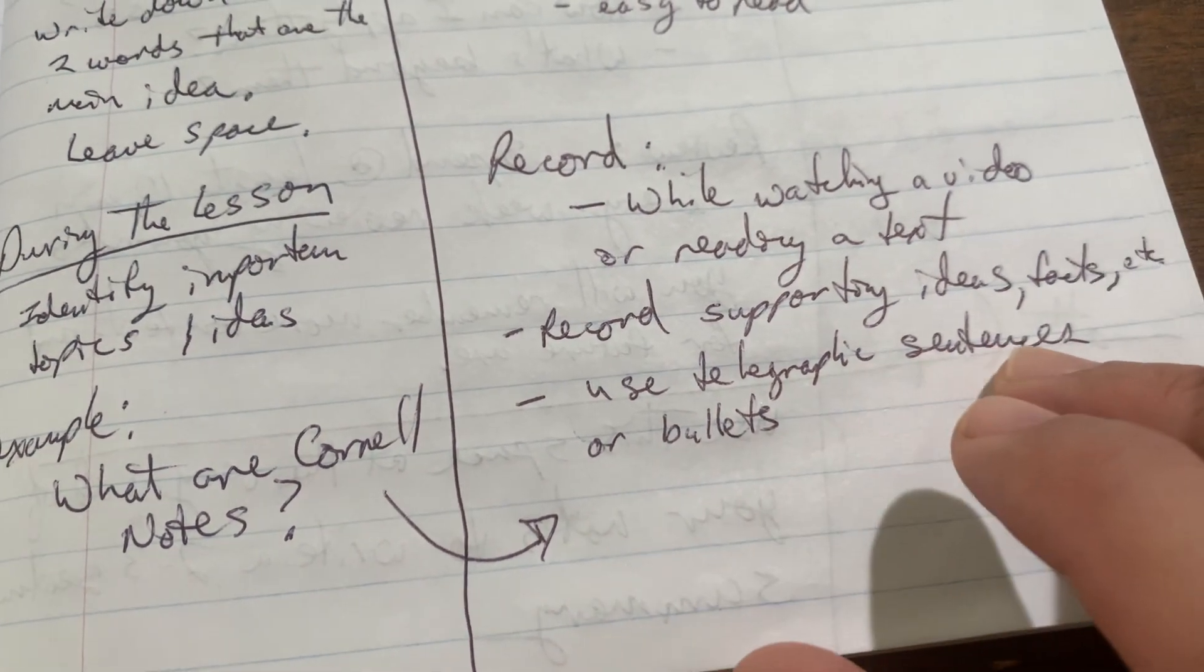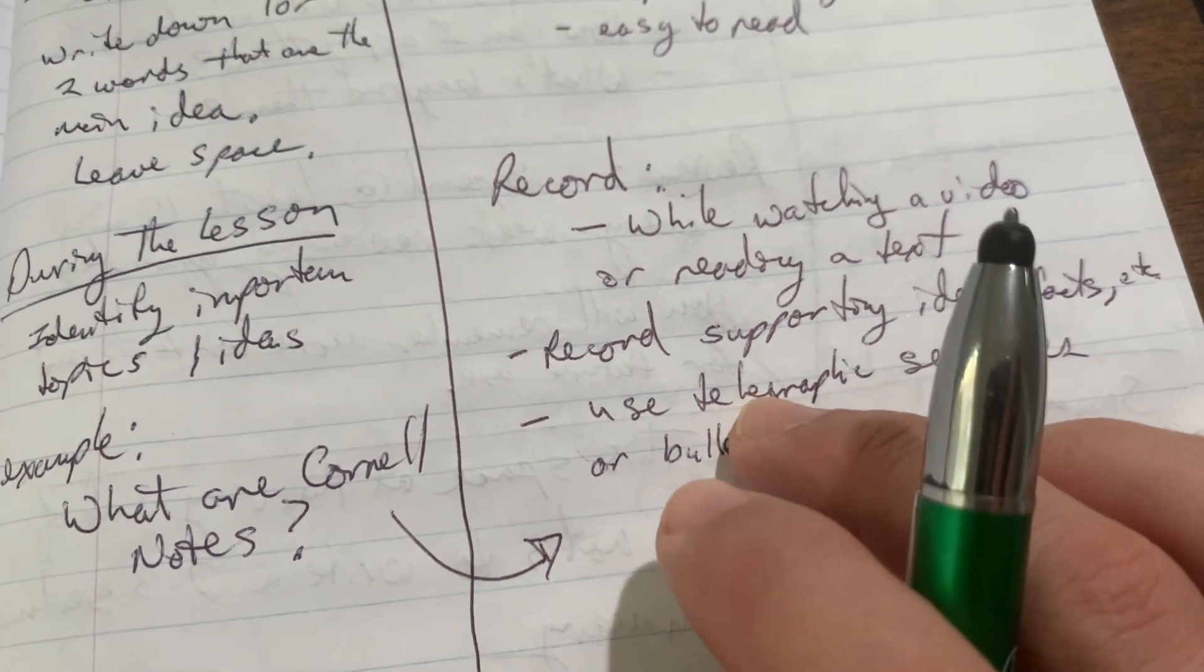Now, in the moment, you're going to record the notes while watching a video or reading a text. You're going to record supporting ideas, facts, etc., and you're going to use short sentences or bullets. A telegraphic sentence is what that says. Telegraphic sentence is one that contains the basic information you need. There's no extra words. It is only what you need to know.